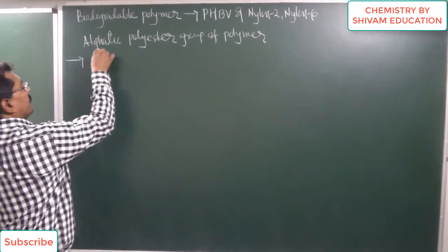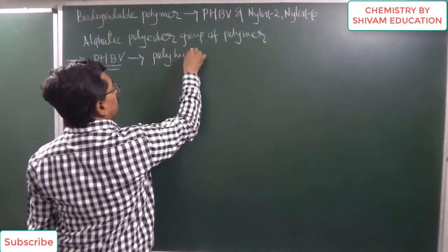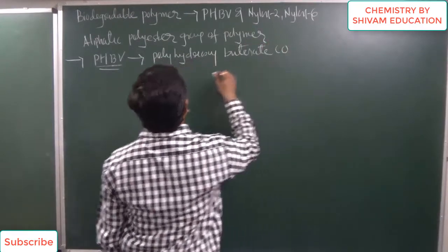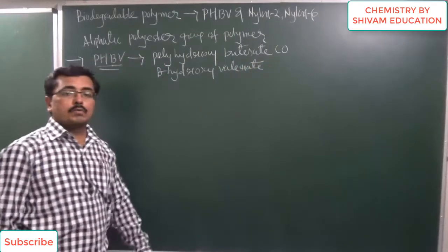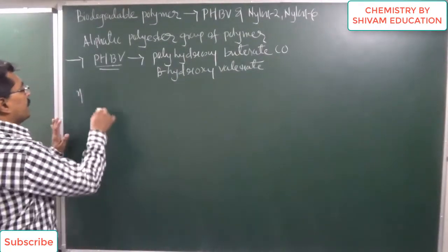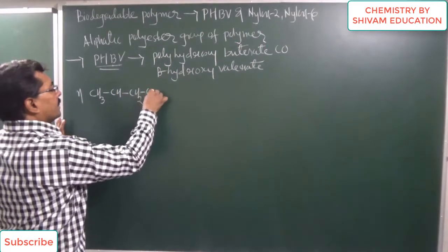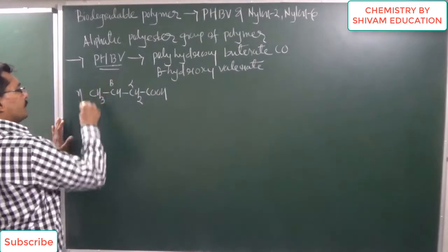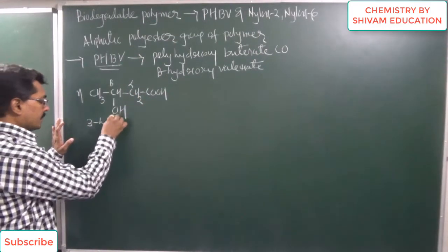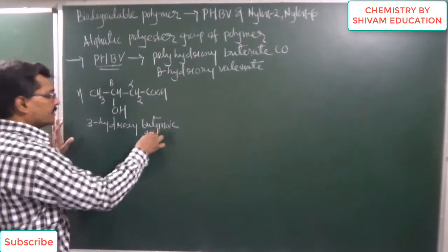PHBV stands for polyhydroxy butyrate co-beta hydroxy valerate. PHBV is prepared from two monomers. The first monomer is beta-hydroxy butanoic acid. We write the structure of butanoic acid, and on the beta carbon there is a hydroxyl group. So according to IUPAC nomenclature, we can give it the name 3-hydroxy butanoic acid.